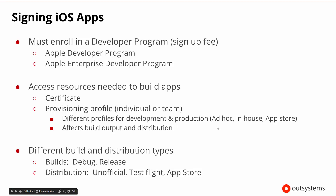There are different profiles for development and production, and even in production you can have different styles of those profiles depending on whether you're trying to produce something that's going to be available ad hoc, in-house, or actually sent to the app store. These provisioning profiles will affect how the output is built and how it can be distributed. Getting this information, creating the provisioning profiles, and having the right certificate is very important. The best way to truly understand all of this is to go to the Apple website, because it can be a little bit complicated.